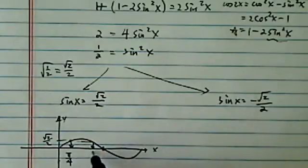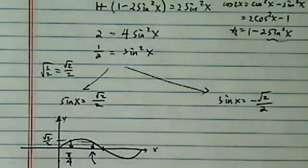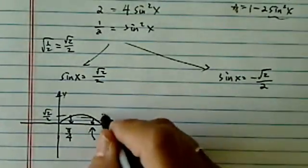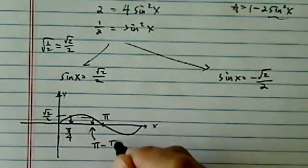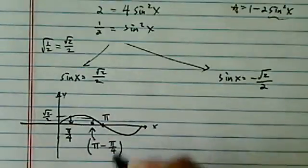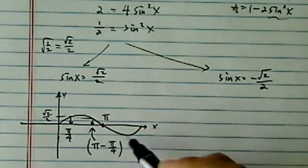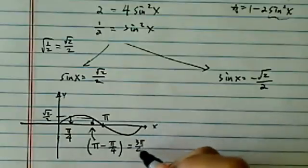π/4. The other one, if you don't remember this one, don't panic on the test. This one is π, so it's π distance, π/4 distance away from π. So this comes to be 3π/4.